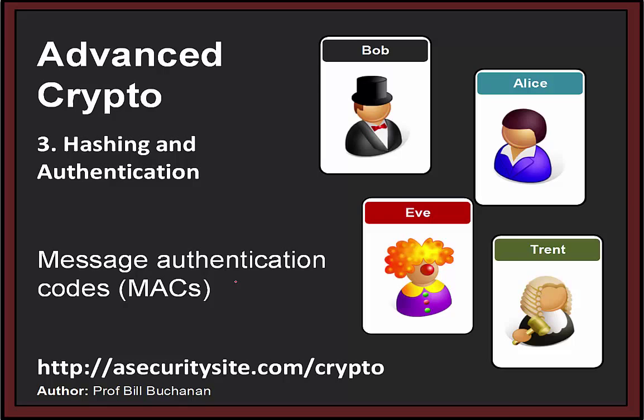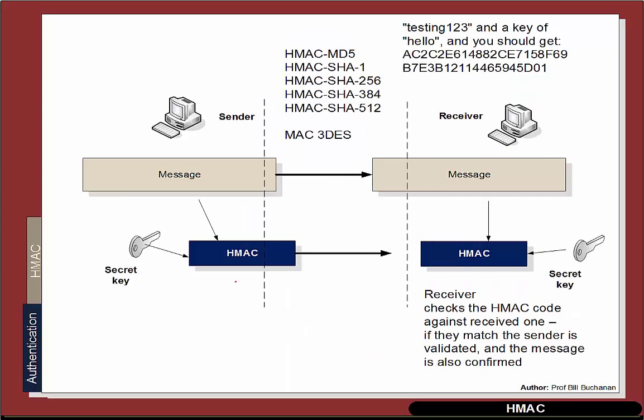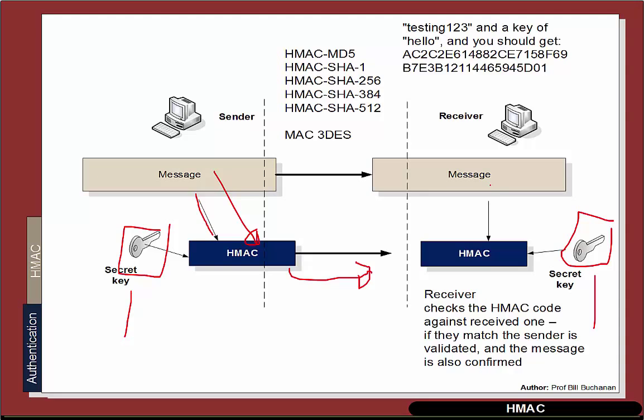Another technique is message authentication codes. Rather than just producing a hash, we have a secret key. That key is used to create an HMAC — a hash-based message authentication code. Typically we negotiate a secret key, take the message, create an HMAC for it, and the other side does the same. We compare the two HMACs, and only if we have the same secret key can we produce the same hash signature.